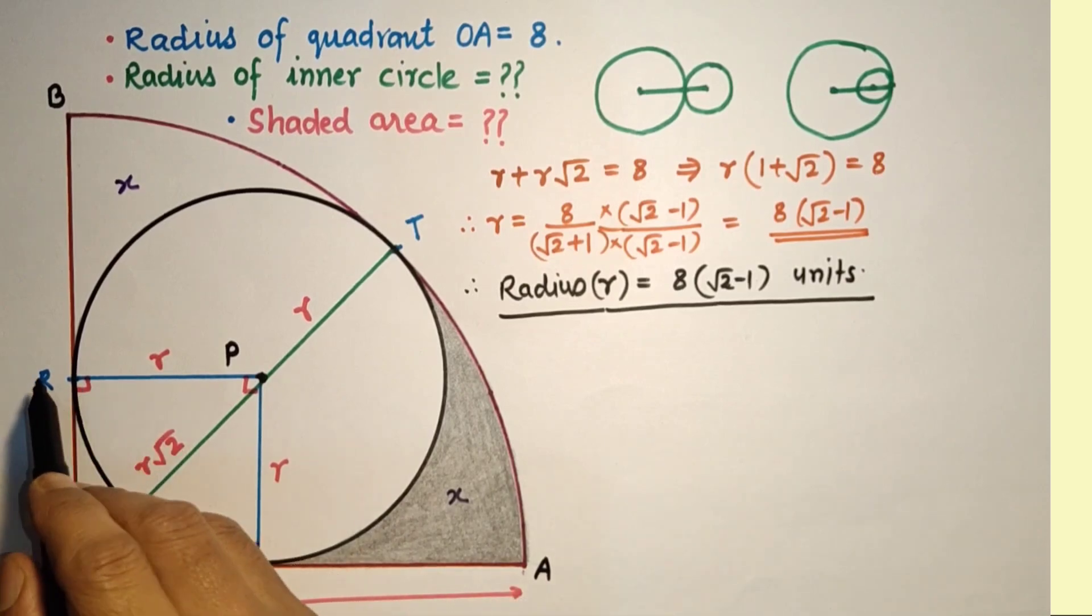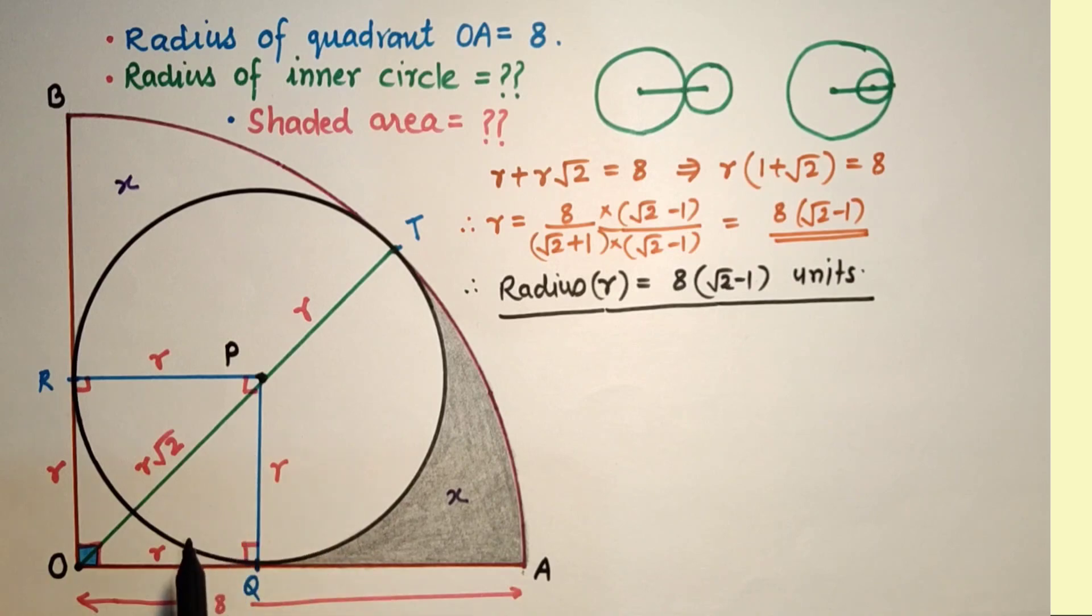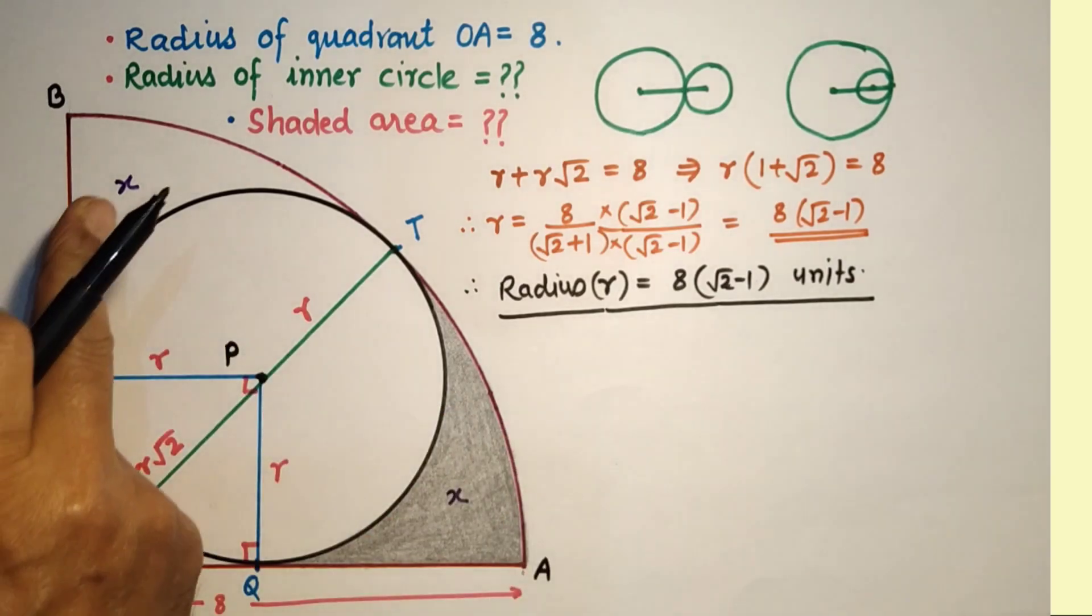If we subtract this 3/4 circle plus this square area from the quadrant's area, we are getting x plus x.